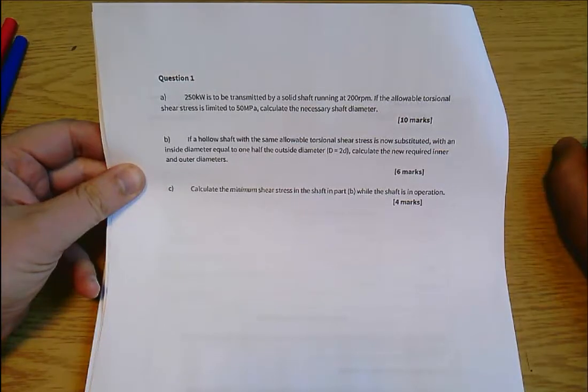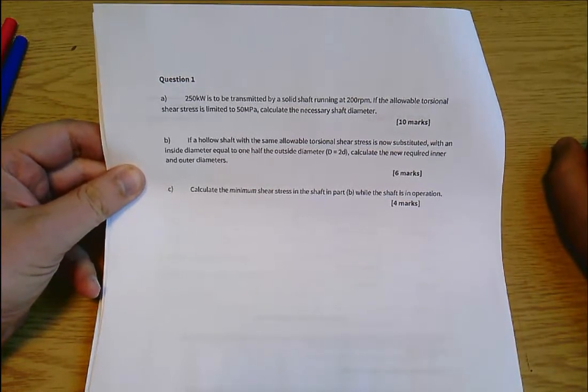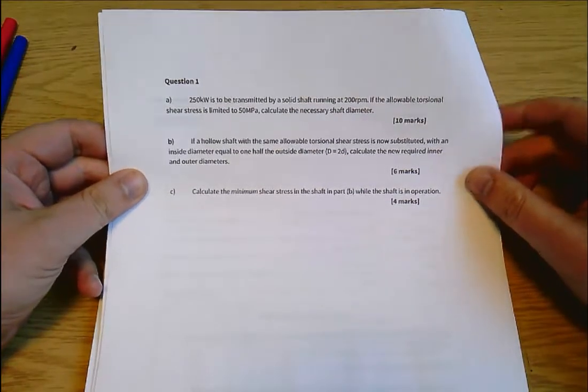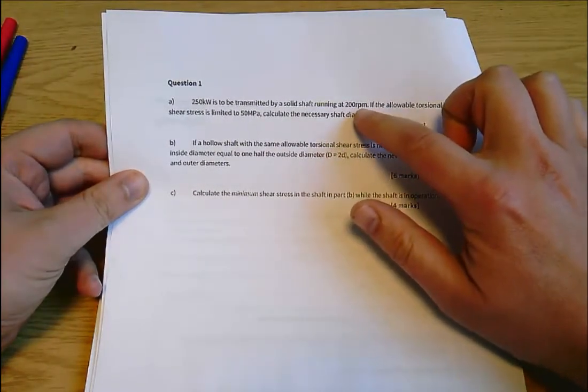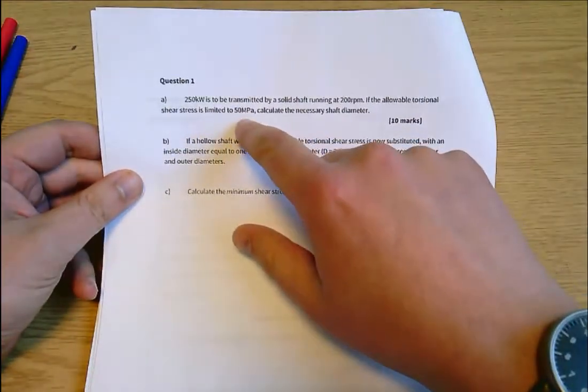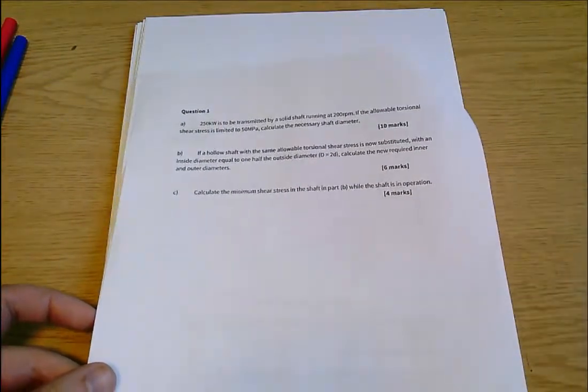This is a practice test for solid mechanics and FEA, and this is question one which is really a question about torsion. First of all we've got a solid shaft running at 200 rpm transmitting 250 kilowatts and a maximum torsional shear stress of 50 megapascals. It says calculate the necessary shaft diameter. This is kind of a standard shaft sizing question in solid mechanics.